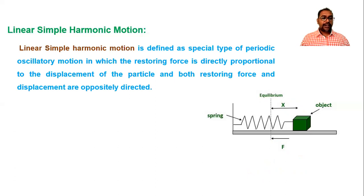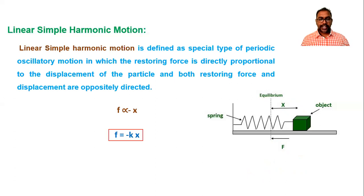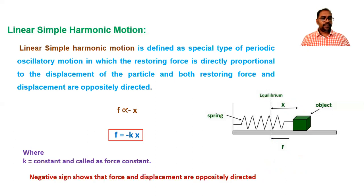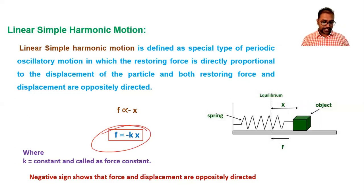We get F proportional to minus x, and inserting the constant of proportionality k — also called the force constant — we write F = −kx. The negative sign indicates that the restoring force and displacement are oppositely directed. Using this formula, we now obtain the differential equation of linear SHM.